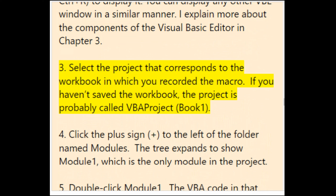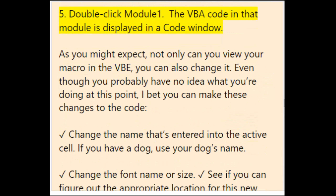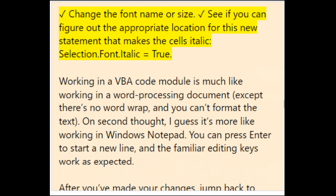Select the project corresponding to the workbook in which you recorded the macro (probably 'VBA Project Book1'). Click the plus sign to the left of the Modules folder — the tree expands to show Module1. Double-click Module1 and the VBA code in that module is displayed in a code window. You can view and also change your macro in the VBE — try changing the name entered into the active cell, changing the font name or size, or adding a statement like Selection.Font.Italic = True.